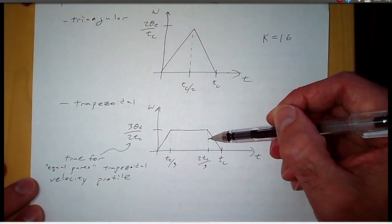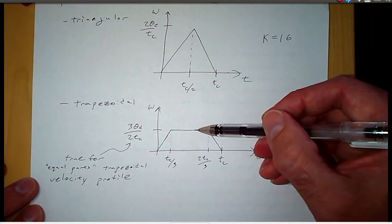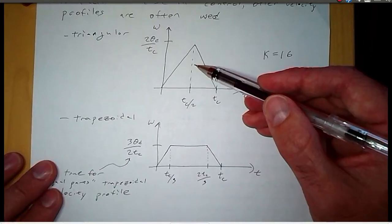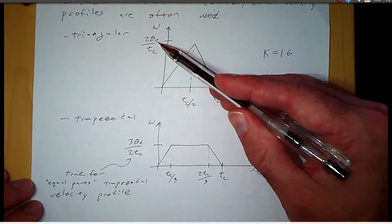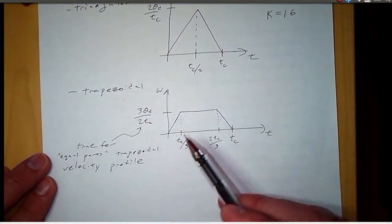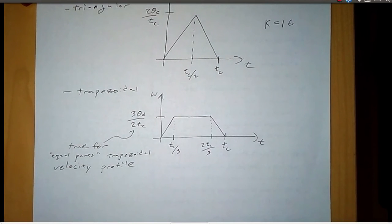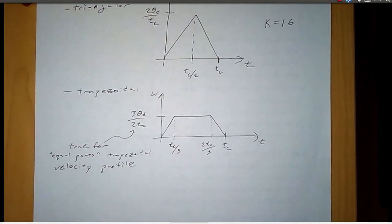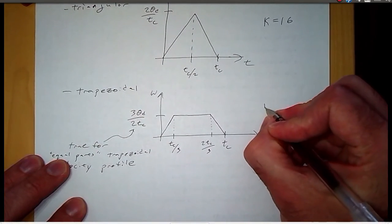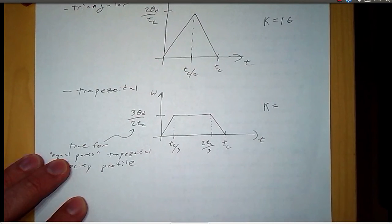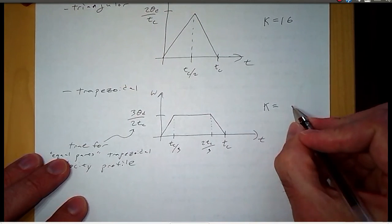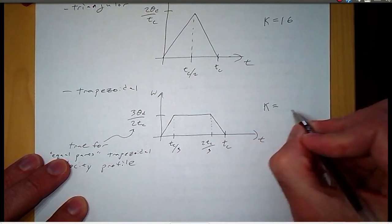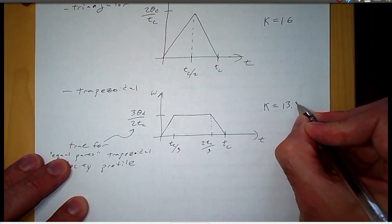And if you decrease this time of constant velocity all the way to where it's zero, then you end up with a triangular velocity profile. And the maximum velocity is two theta d over T C. So this three theta d over two T C is the maximum velocity if you have equal parts in your trapezoidal velocity profile. And K for our energy dissipation for the trapezoidal, equal parts trapezoidal velocity profile is 13.5.